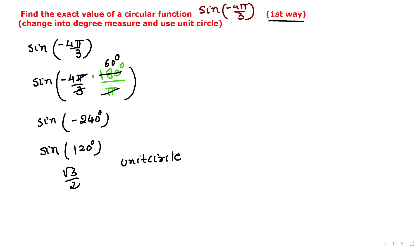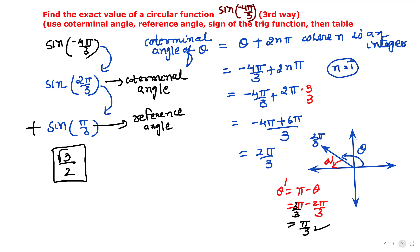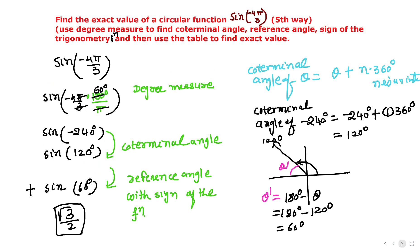Exact value means no calculator is allowed. Summarizing all five ways: the first way gives √3/2, the second way gives √3/2 positive, the third way gives √3/2 positive, the fourth way gives √3/2 positive, and the fifth way gives √3/2 positive.